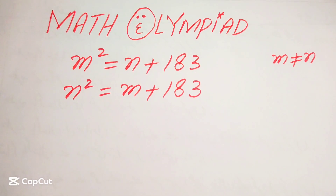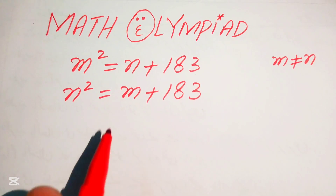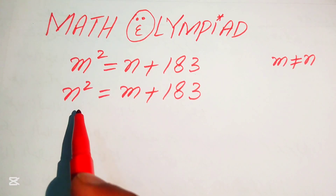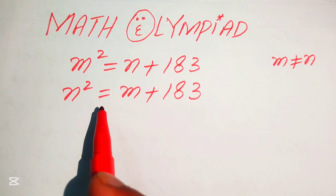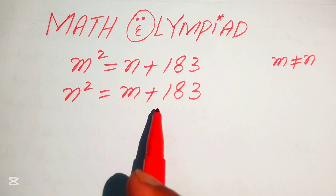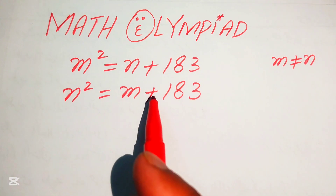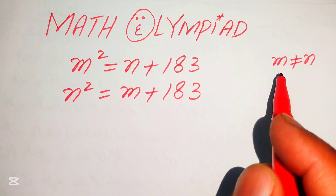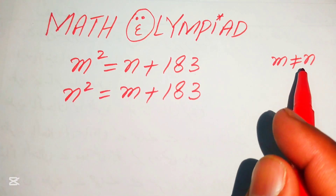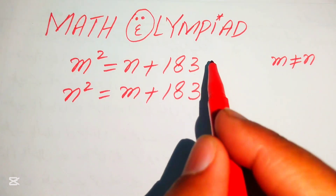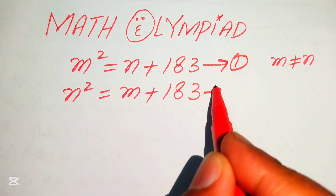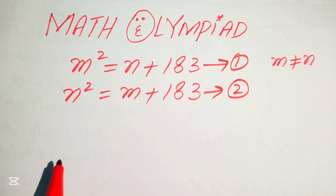Hello everyone, welcome to solve this nice math algebra problem. We have m squared equals n plus 183, and n squared equals m plus 183. We solve this problem for the values of m and n, keeping in mind that m is not equal to n. We call these equation number 1 and equation number 2.